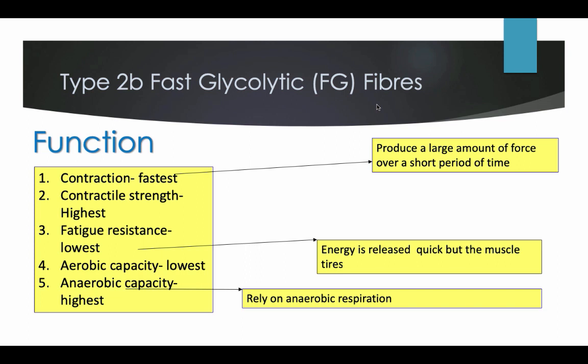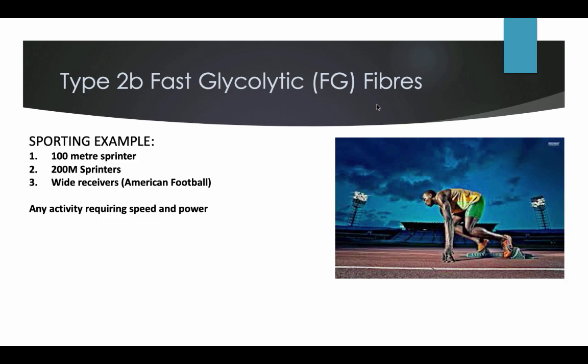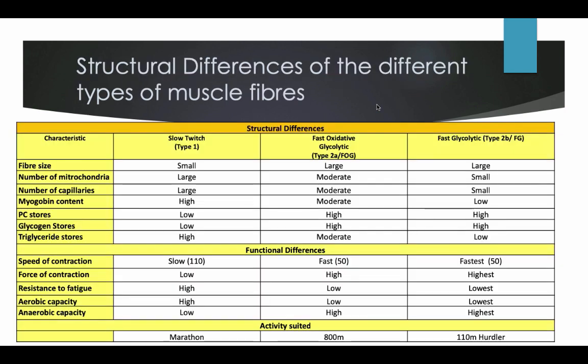Type 2B fibres rely solely on anaerobic respiration. Sporting examples include a 100m sprinter such as Usain Bolt, 200m sprinters, or wide receivers in American football — any activity that requires speed and power. Athletes in these events will have high levels of type 2 fast glycolic fibres. A sprinter has approximately 76% fast twitch fibres compared to 24% slow twitch fibres. The table below shows the structural differences of the different fibre types, comparing all three types against each other. It is recommended to copy this table into your book or revision notes.